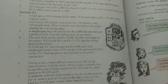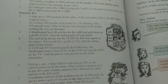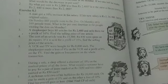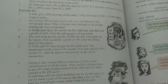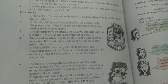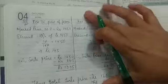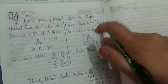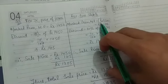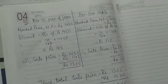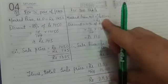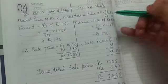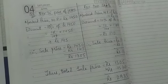Now the next question: during a sale, a shop offered a discount of 10% on the marked price for all items. What would a customer have to pay for a pair of jeans marked at ₹1,450 and two shirts marked at ₹850 each? The marked price for two shirts = ₹850 × 2 = ₹1,700. So the MRP of jeans is ₹1,450 and of the two shirts is ₹1,700.